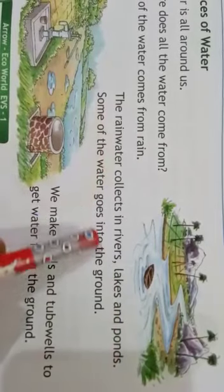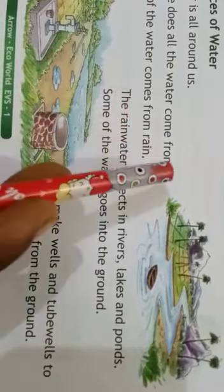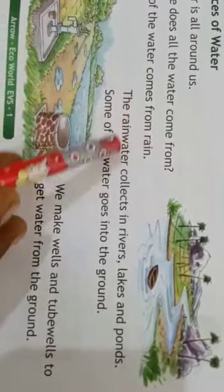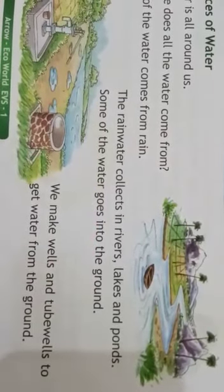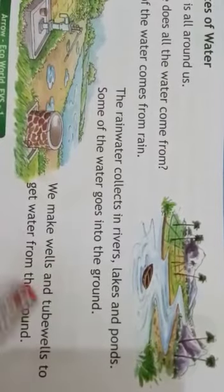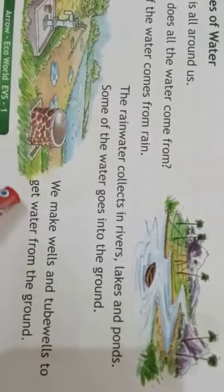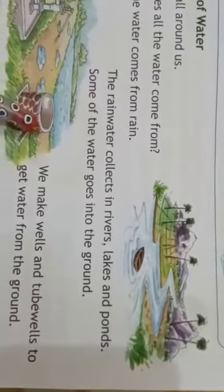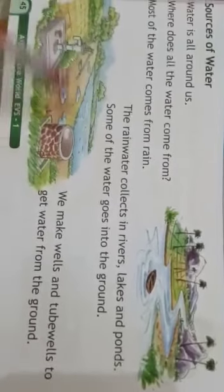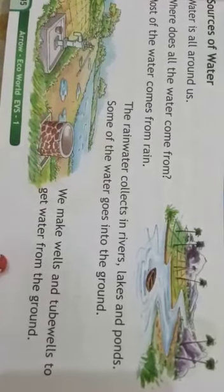Some of the rainwater goes into the ground — it goes inside the ground and is collected there. To get underground water, we make wells and tube wells. From these, we get water from under the ground.